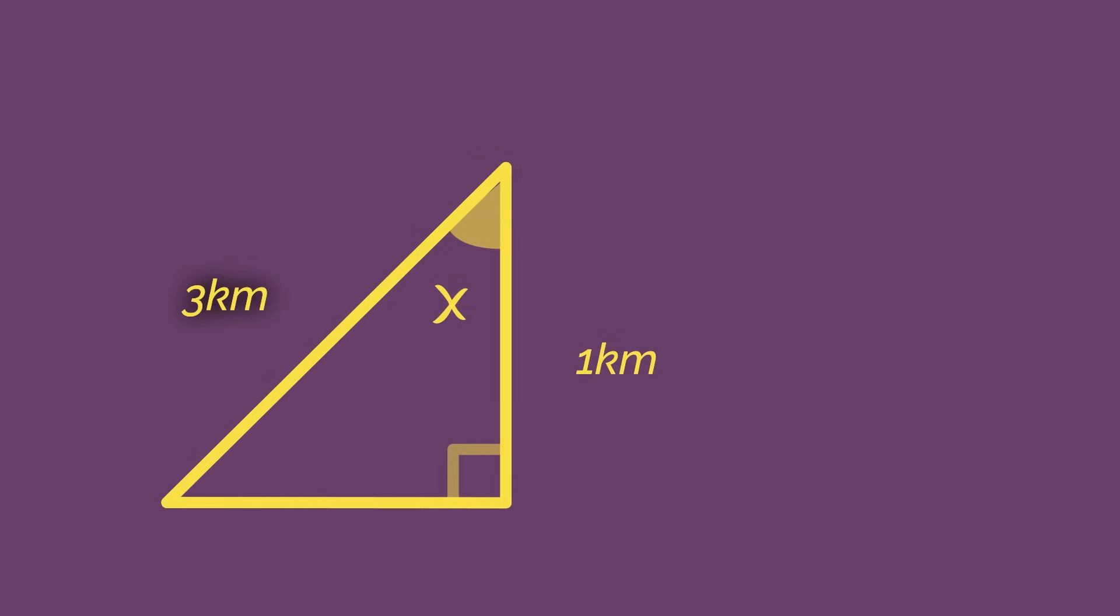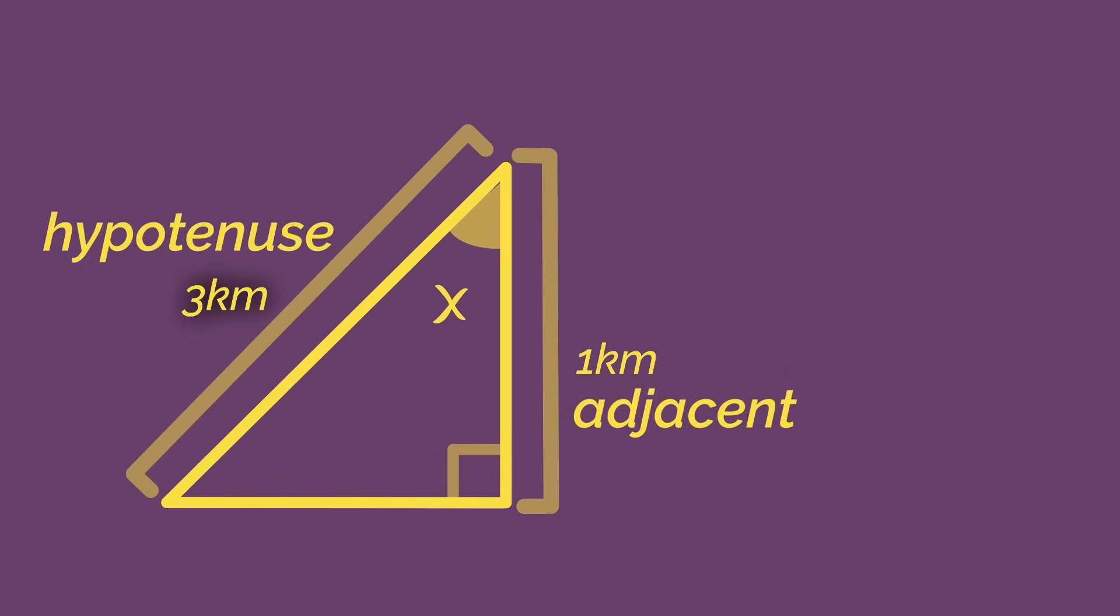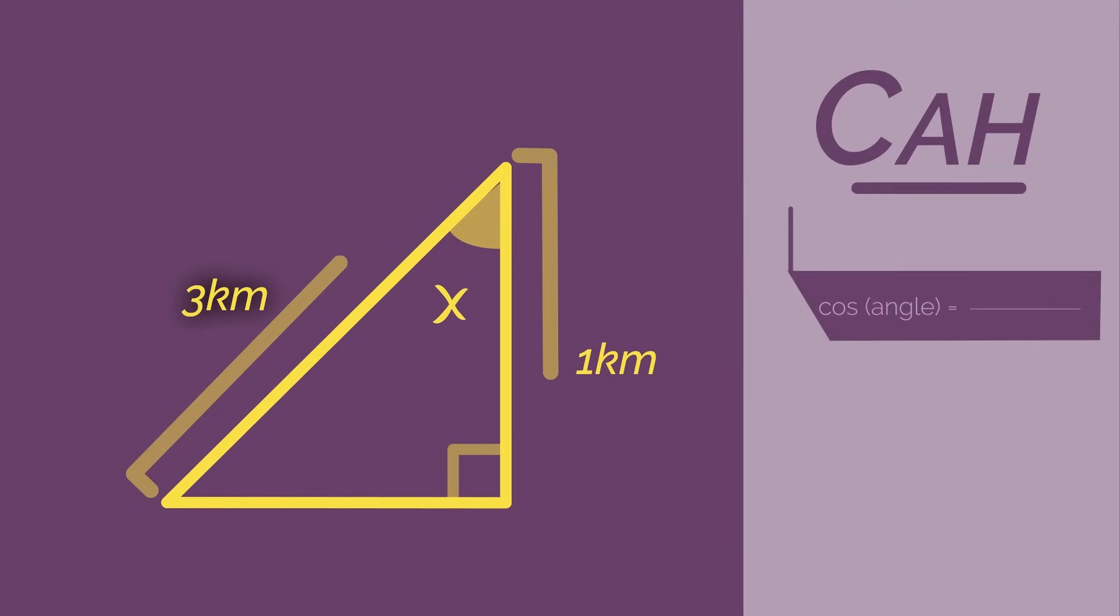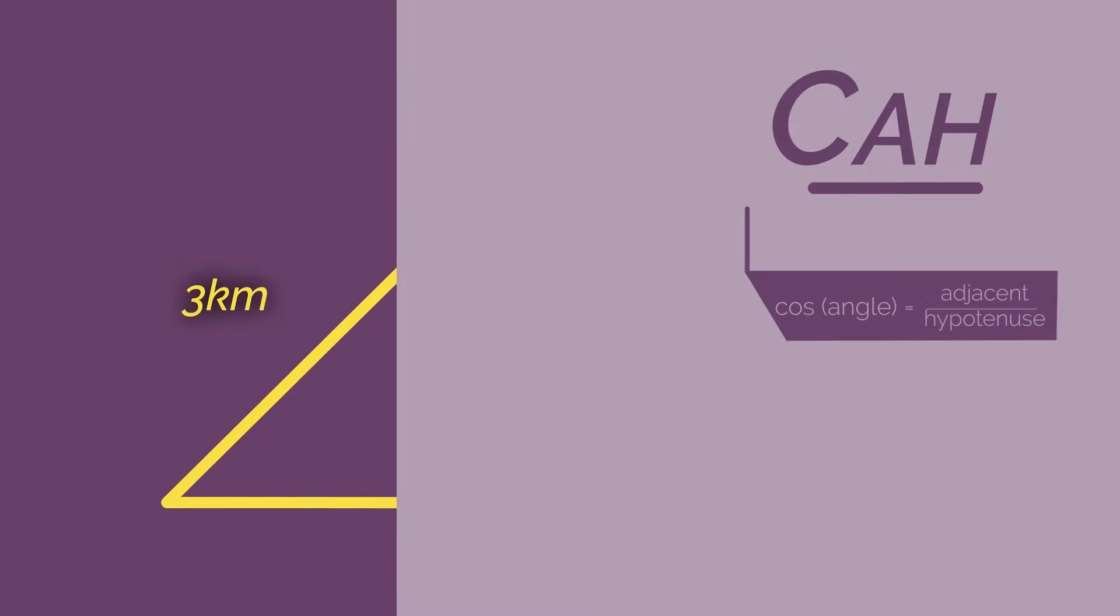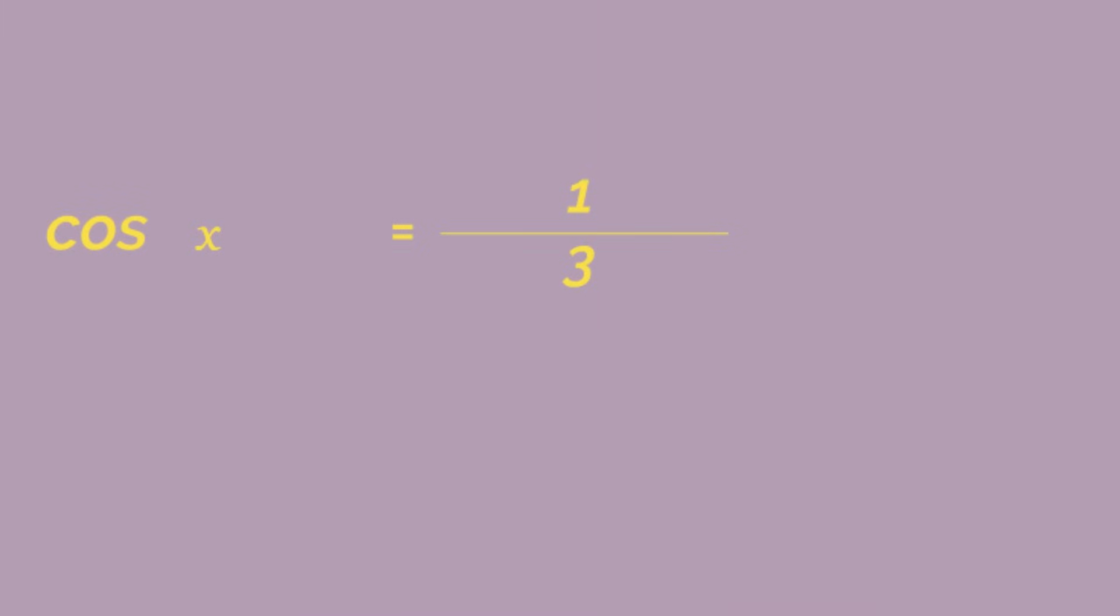As always with SOHCAHTOA, start by labeling the sides. Adjacent is here and hypotenuse, so AH means we use cos. Cos angle equals adjacent divided by hypotenuse. Substituting in our values, we have cos x equals 1 divided by 3. Using inverse cos, x equals inverse cos brackets 1 divided by 3. Type into our calculator and we get x equals 70.5 degrees.